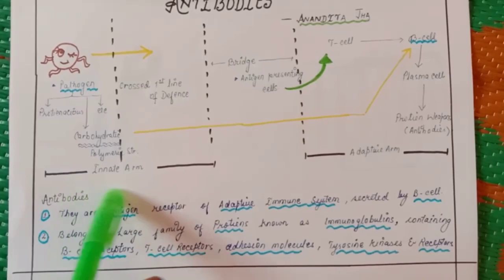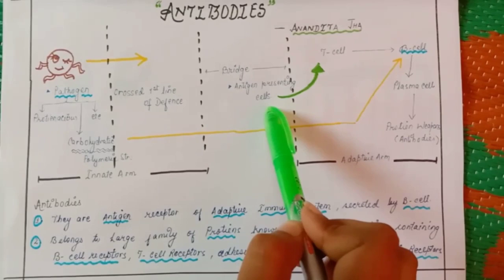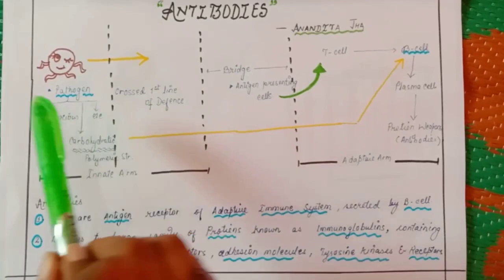After crossing the first line of defense, it will go to the bridge area. Bridge area means here the antigen presenting cells are present, like macrophages and other cells. In the classic pathway, we have the pathogen crossing the first line of defense.